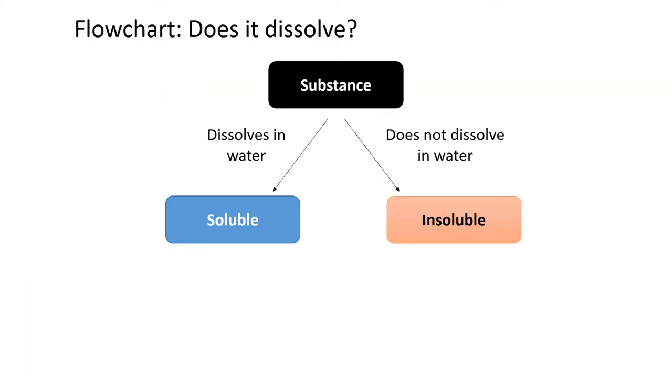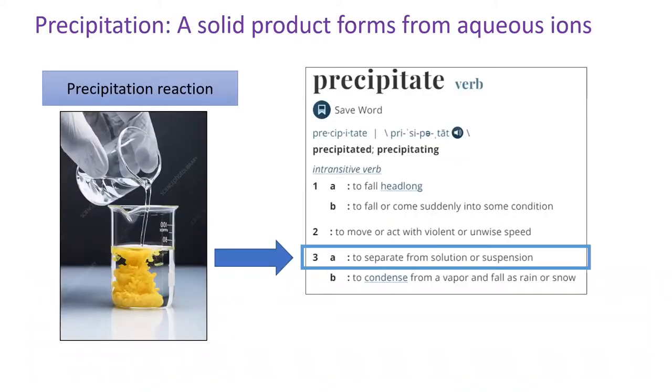In the last lesson, we learned that soluble substances dissolve in water while insoluble substances do not. One chemical reaction turns two soluble substances into an insoluble substance. This is called a precipitation reaction. You may have heard the word precipitation applied to the weather to mean stuff falling from the sky. In chemistry, we think of precipitation as stuff falling out of solution.